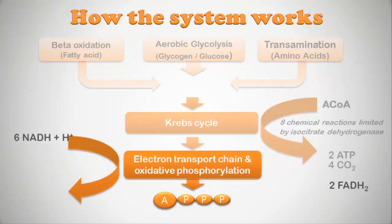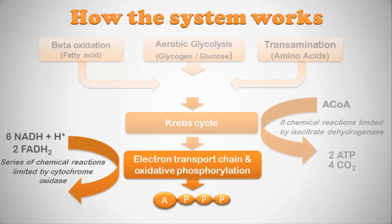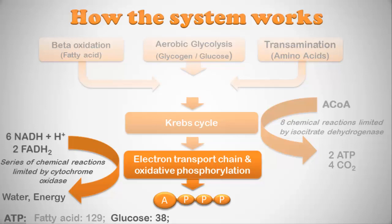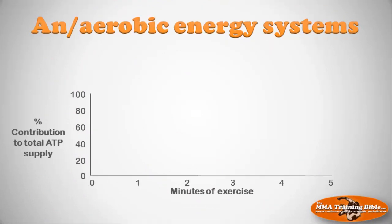Those hydrogen ion carriers from the Krebs cycle, along with carriers from glycolysis, enter the electron transport chain. Through a series of chemical reactions you ultimately get water and a lot of energy. Starting with a molecule of fatty acid you get 129 ATP molecules; starting with glucose you get 38; starting with glycogen you get 39; with amino acids you get about 12. So with fat you get a lot of ATP, a bit less with glucose and glycogen, and even less with amino acids. These numbers can vary slightly but are generally accurate.